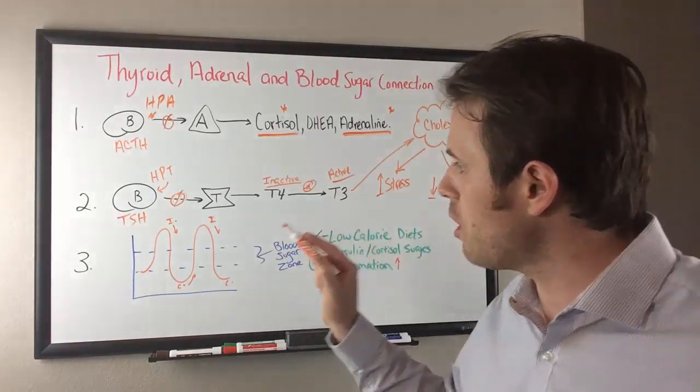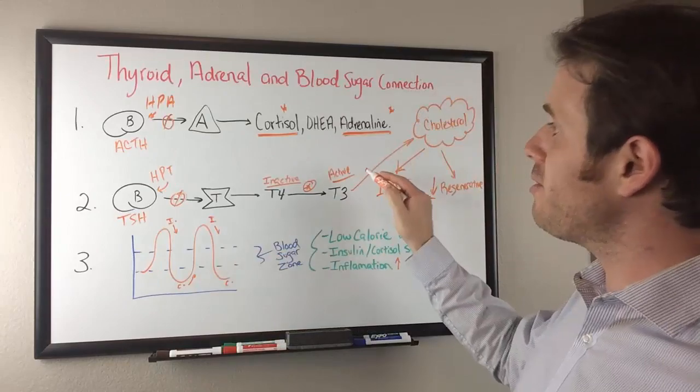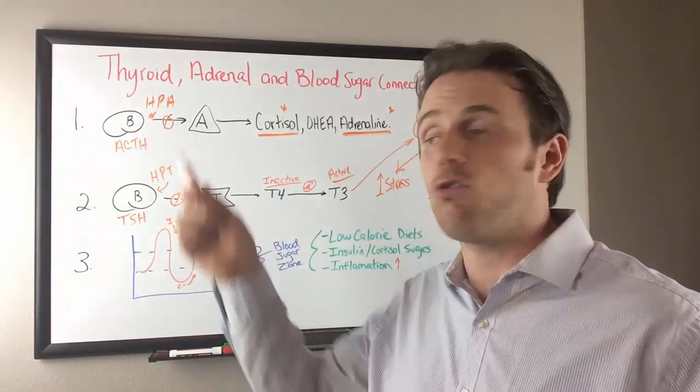So you can see here, we have to get to the root cause, which is the blood sugar, because the blood sugar causes the thyroid issue and it will cause the adrenal issue as well.